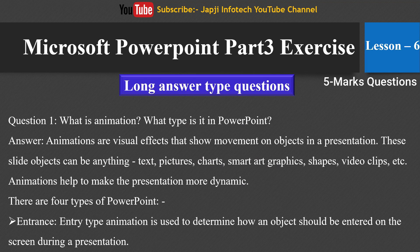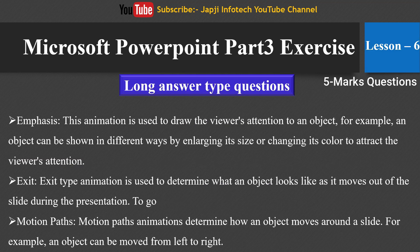Now for long answer type questions. The first question: what is animation and what types are available in PowerPoint? Animations are visual effects that show movement on objects in a presentation — text, pictures, charts, SmartArt graphics, shapes, video clips, etc. There are four types. Entrance animation determines how an object enters the screen. Emphasis animation draws the viewer's attention to an object, for example by enlarging its size or changing its color.